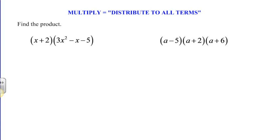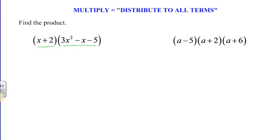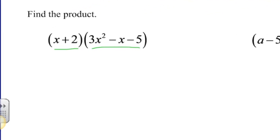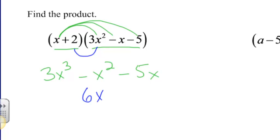When we multiply, we really are going to distribute to all terms. When I see here this is a binomial, because there's two terms, times a trinomial, three terms, we're going to distribute the x to everything and then the 2 to everything. So right now it's x plus 2 times 3x squared minus x minus 5. I'm going to distribute this x. I'm going to get x times 3x squared, which is 3x cubed. I'm going to do x times negative x, which is negative x squared. I'm going to do x times negative 5, which is negative 5x. Now I need to do the same thing with my number 2. 2 times 3x squared, that's 6x squared. Now notice where I put this 6x squared, right underneath the negative 1x squared.